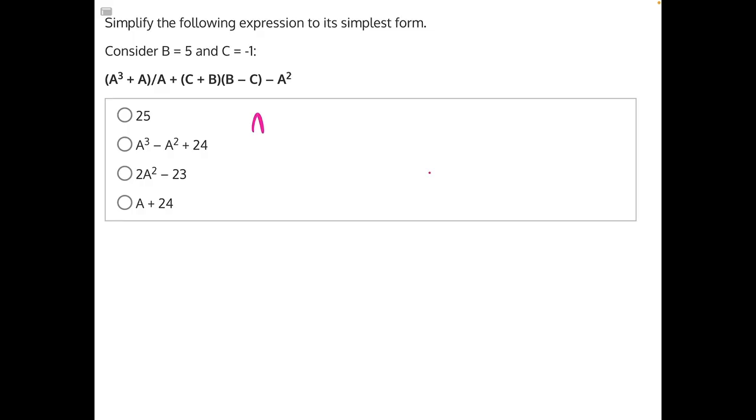We have a cubed plus a divided by a being added to c plus b, which would be negative 1 plus 5, times b minus c, which would be 5 minus negative 1, be very careful with your signs there, minus a squared.